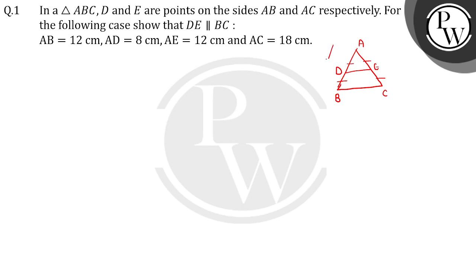AB is given as 12. AD is given as 8. Similarly AE is given as 12, and AC as 18. So DB is 12 minus 8 which is 4, and EC is 18 minus 12 which is 6.